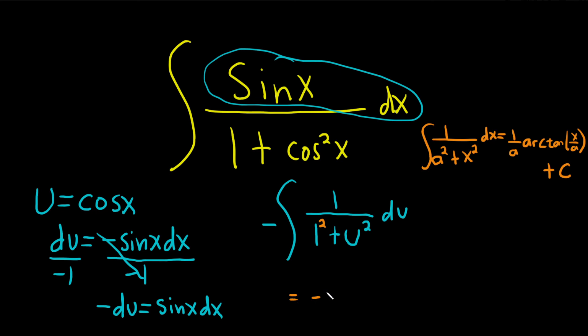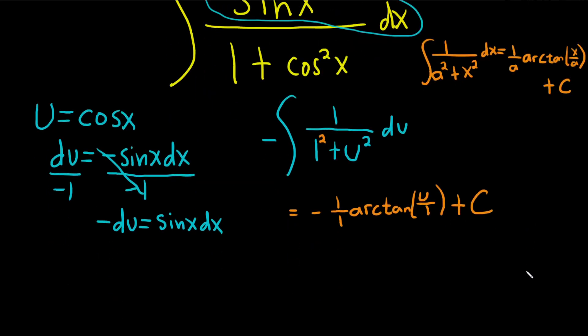So here it's really 1 squared. So it's negative. It's just negative. And then we have 1 over a. a is 1. So it's 1 over 1. Arctangent of, instead of x over a, it's u over 1. And then plus our constant, capital C. So 1 over 1 is 1.